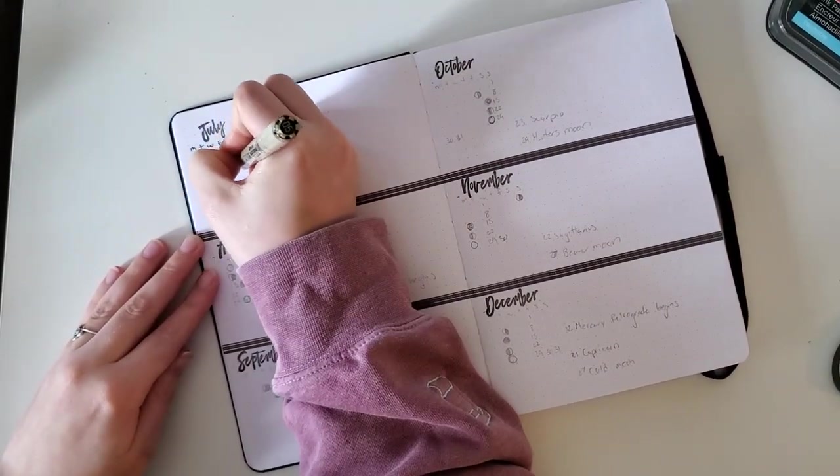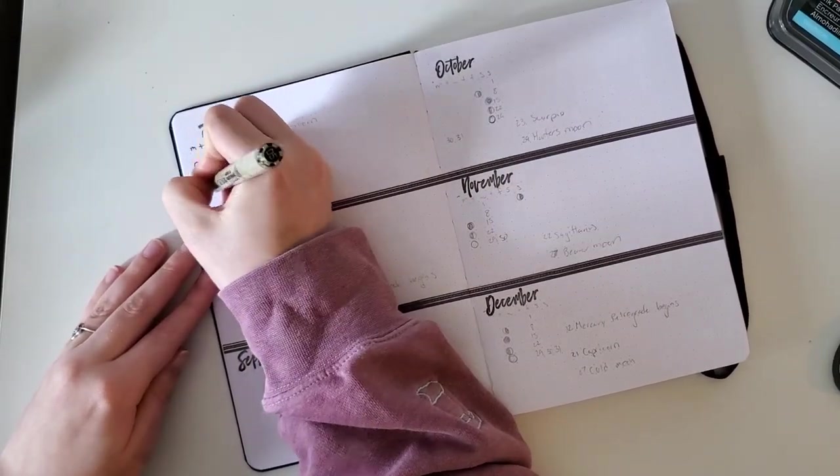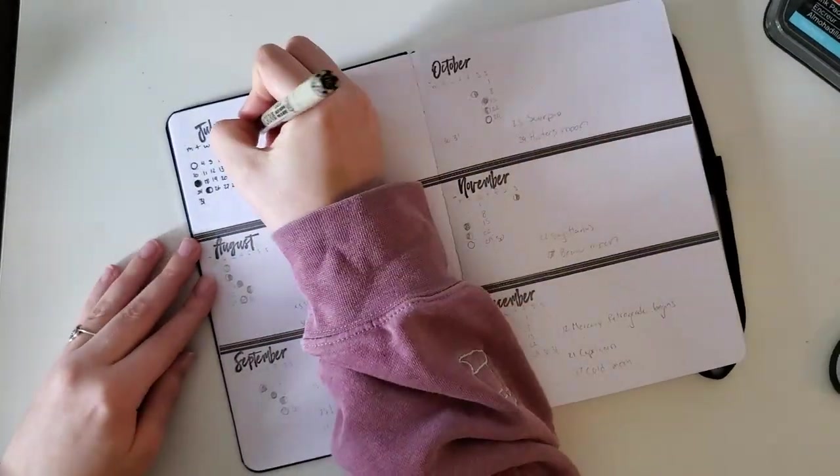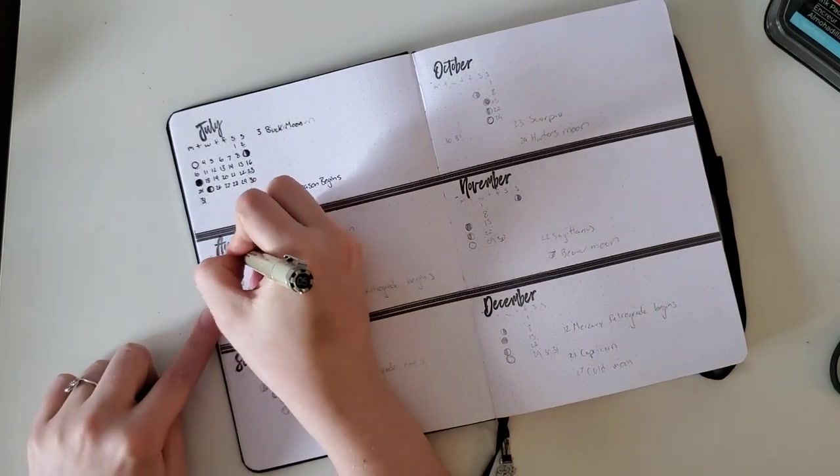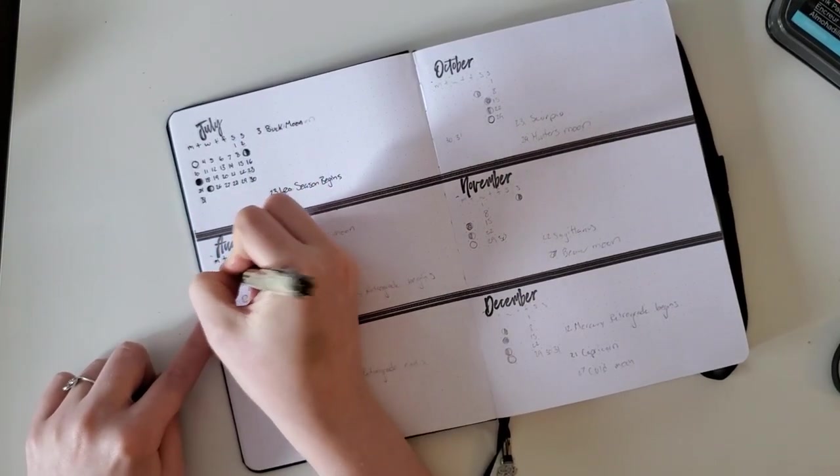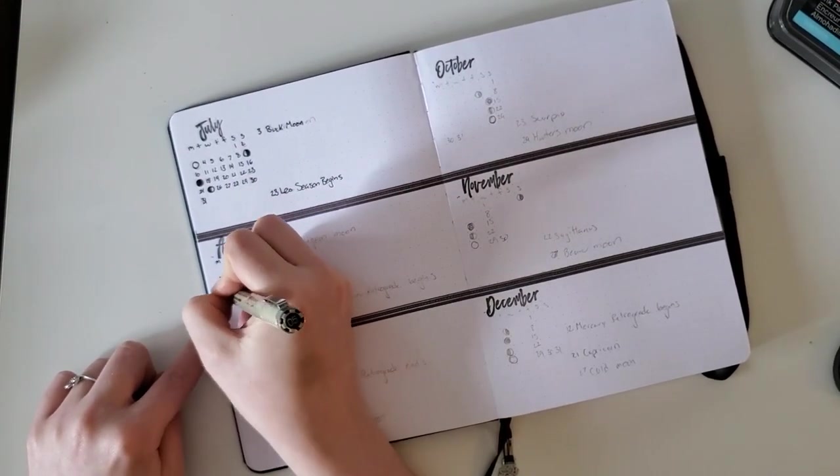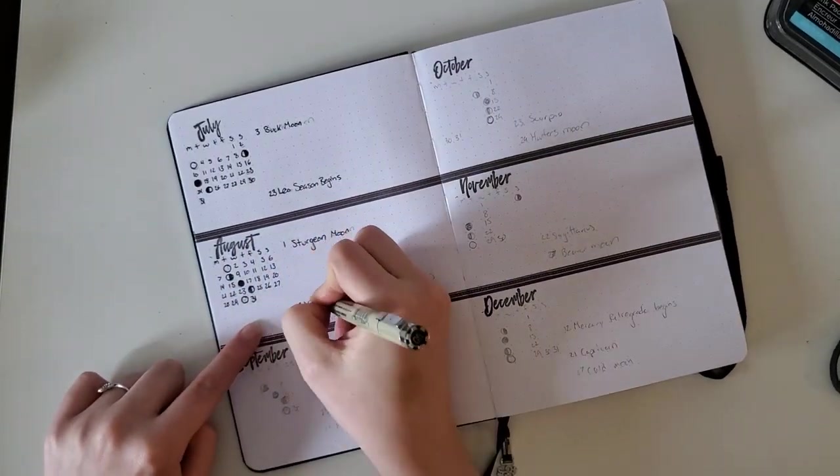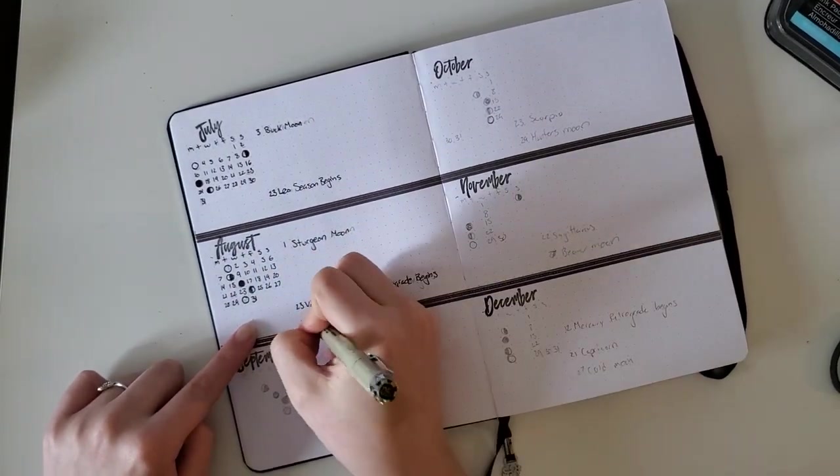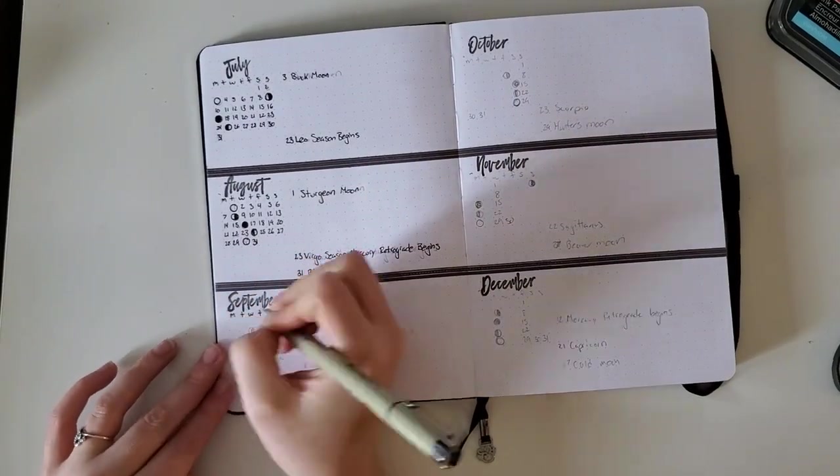I am hoping to get the whole year in this bullet journal. This is the first year I'm using one of the A5 Archer and Olive notebooks.